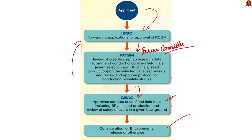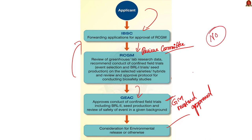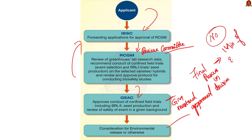A news report states that the Genetic Engineering Appraisal Committee has again cleared the proposal for commercial cultivation of genetically modified mustard. But is this the final step in the approval process? No — the Genetic Engineering Appraisal Committee evaluates research into GM plants and recommends or disapproves their release into farmer fields, but the final call is taken by the environment minister. So GM mustard must also get a nod from the environment ministry.